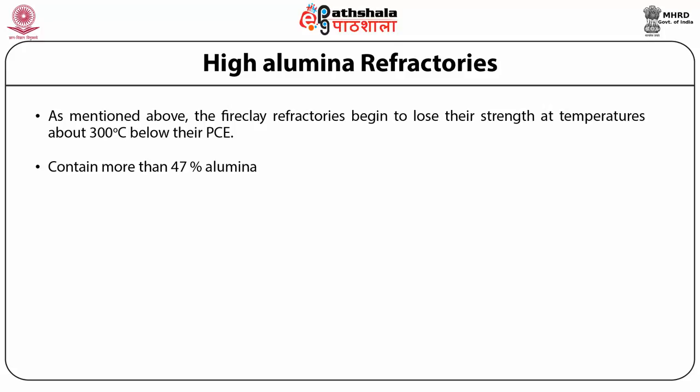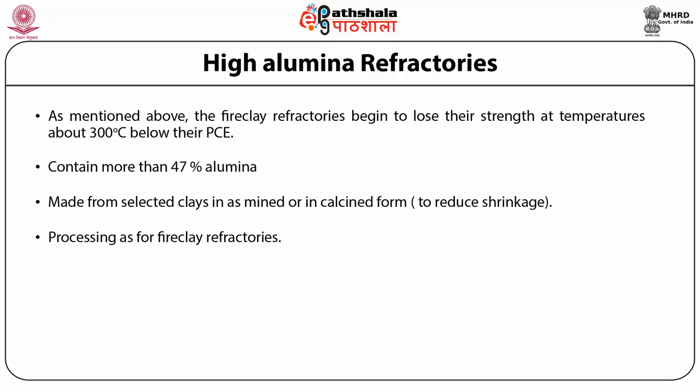Bauxite is an aluminum ore. It consists mostly of the minerals gibbsite (Al(OH)3), boehmite (γ-AlO-OH) and diaspore (α-AlO-OH) mixed with some clay (kaolinite) and some oxides of iron and titanium. It is the main source for the metal aluminium. The refractory grade bauxite after calcination contains 87% Al2O3, 5.5% SiO2, and 3% each of FeO and TiO2. Some clays such as kyanite must be used after calcination to reduce shrinkage.